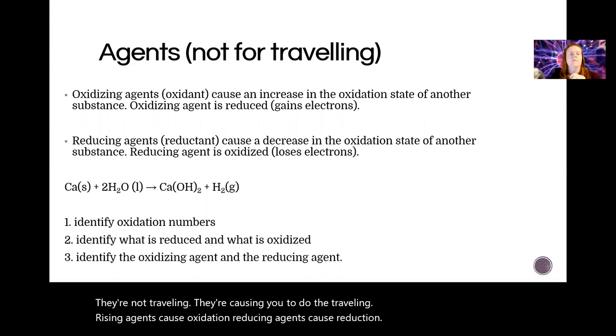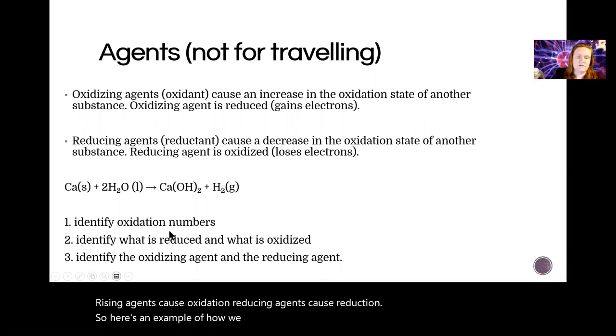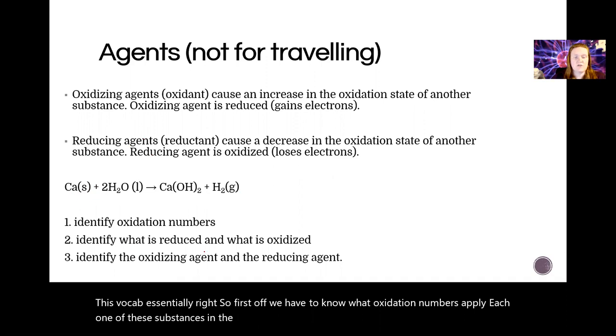Here's an example of how we can apply this vocabulary. First we have to know what oxidation numbers apply to each substance in the reaction, then we can figure out which is reduced and which is oxidized, and then we can apply the terms oxidizing agent and reducing agent.